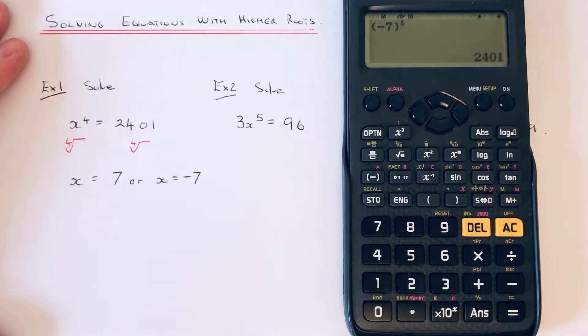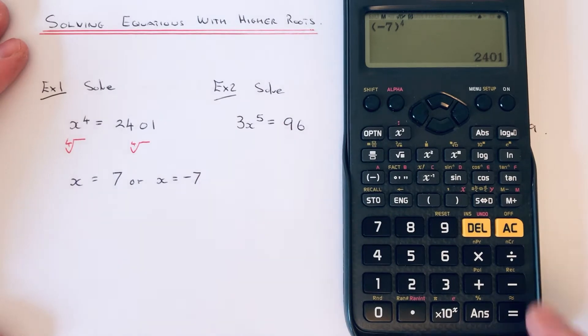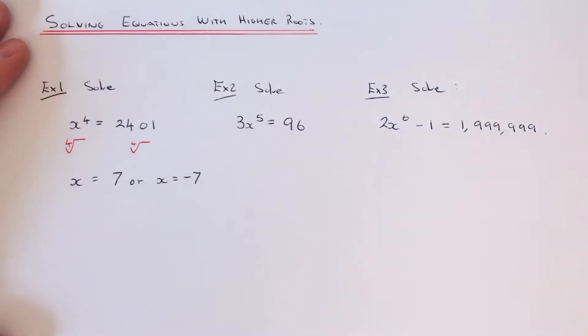Let's move on to the second example. This time we've got 3x to the power of 5 equals 96. So we've got x to the power of 5, which has been multiplied by 3. If we get rid of the 3 first by dividing by 3 on both sides...